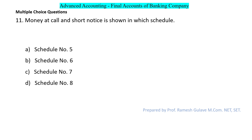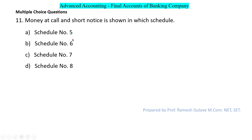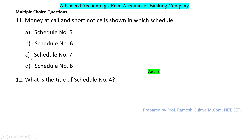The next question asks: money at call and short notice is shown in which schedule? Money at call and short notice is shown in schedule number 7, whose title is 'Balances with Banks and Money at Call and Short Notice', so option C is the right answer.